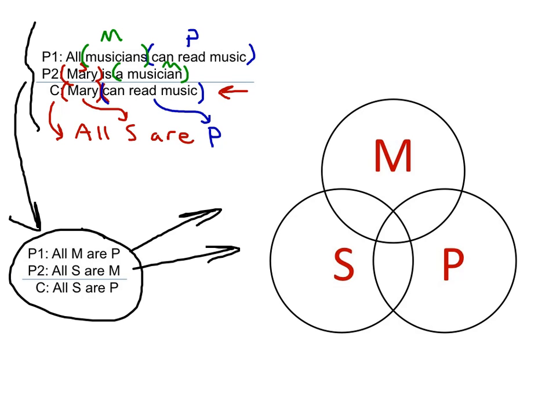And we know that from being able to diagram the A claim of the form all S are P, that this is the region that needs to be shaded out to correctly diagram all M are P. So I'll go ahead and fast forward through that now.